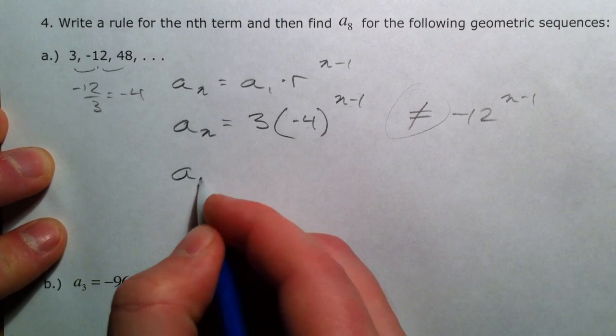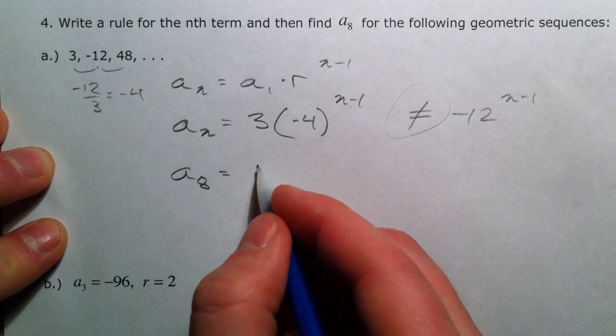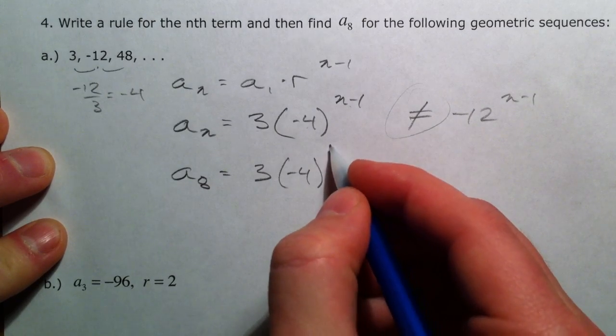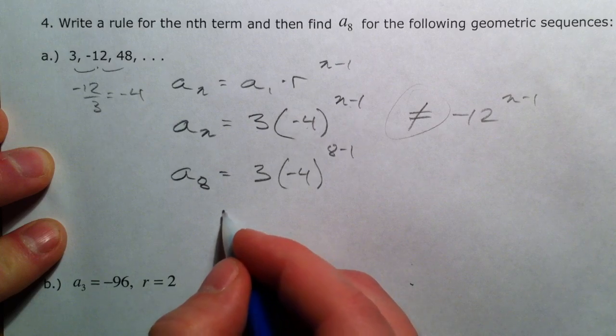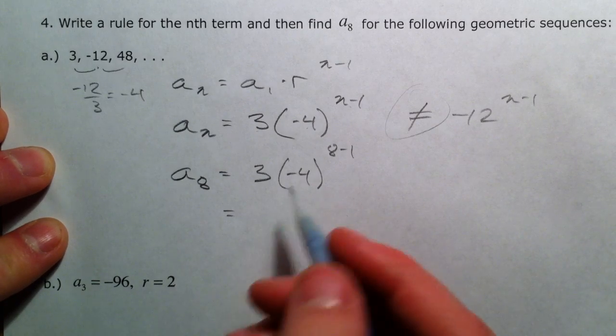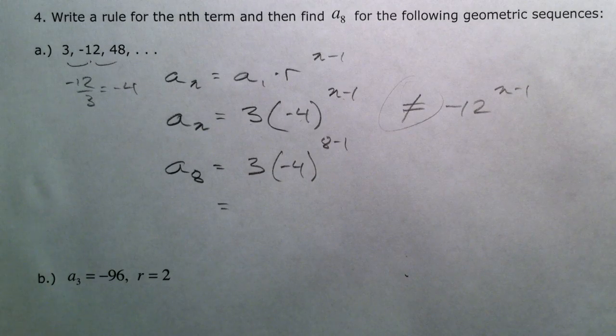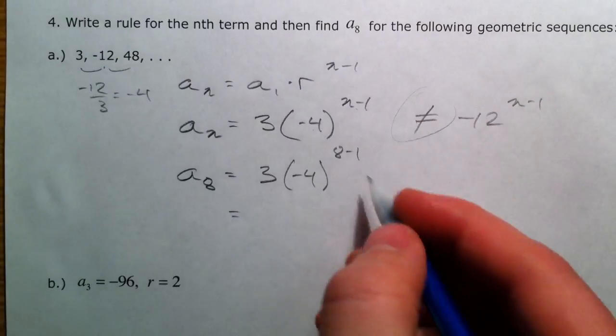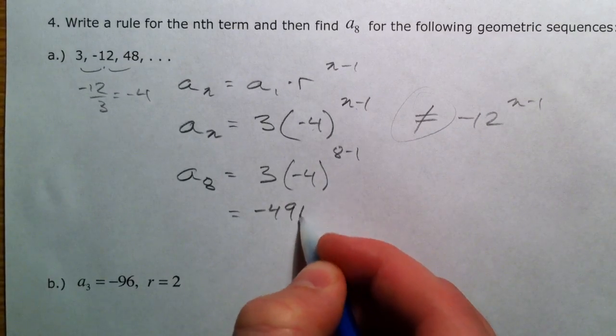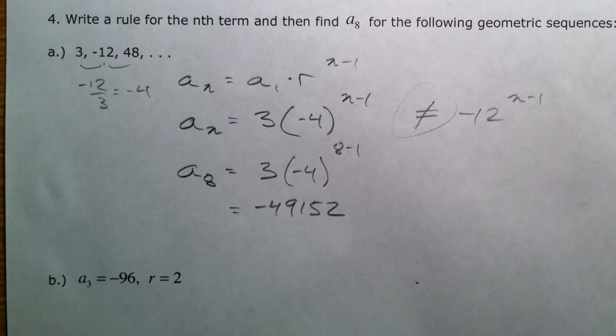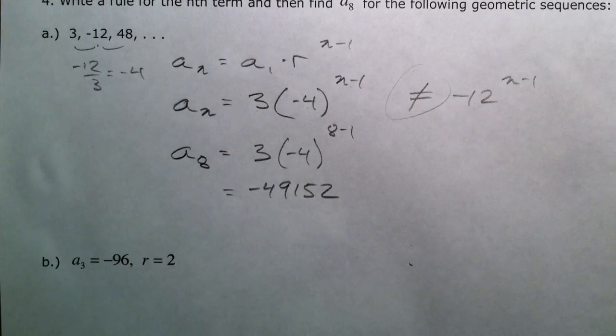Then find a sub 8. a sub 8 equals 3 times negative 4 to the 8 minus 1, because we want to find the 8th term. And so 3 times negative 4 to the 7th power. Negative 49,152.